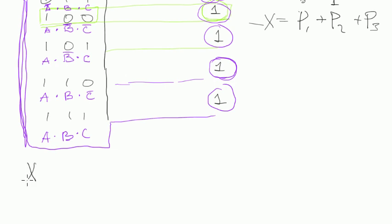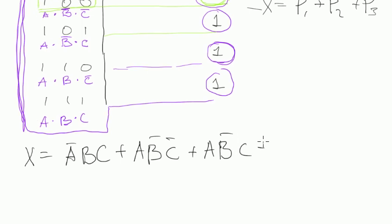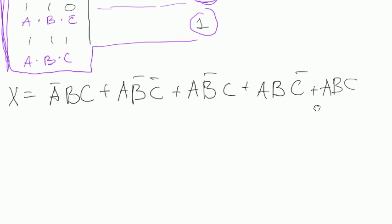So, x will equal — we write this one: a negated, b, c, plus the next one: a multiplied by b negated, c negated, then the next one: a multiplied by b negated, c, then the next one: a, b, c negated, and the last one: just a, b, c. Yeah, five of them — that's what we need.